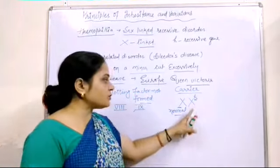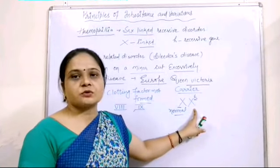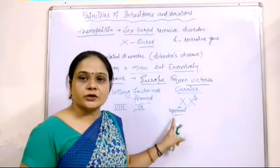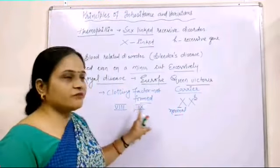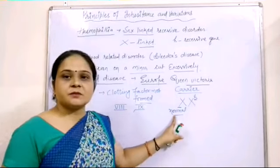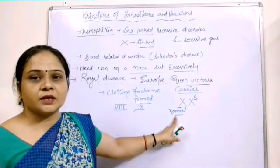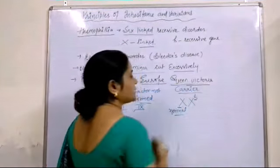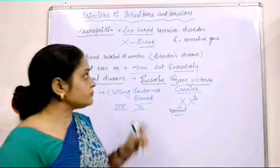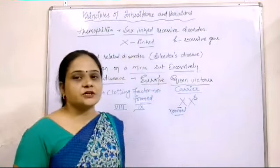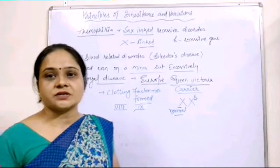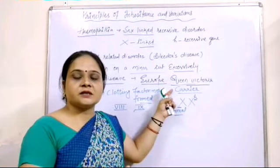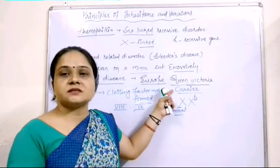In the carrier female, one X chromosome with the recessive gene will not produce the clotting factor, but the other normal X chromosome will produce the clotting factor. So in this condition, when the female is a carrier, she will not have hemophilia disease. This is what we mean when we talk about the sex-linked disorder.